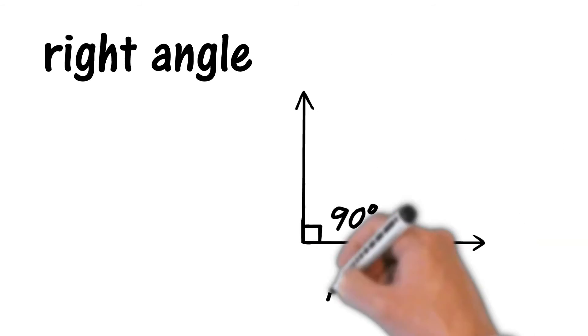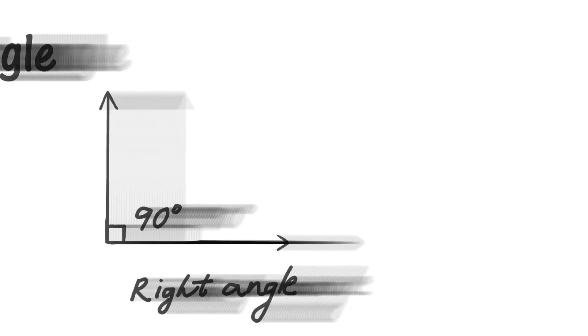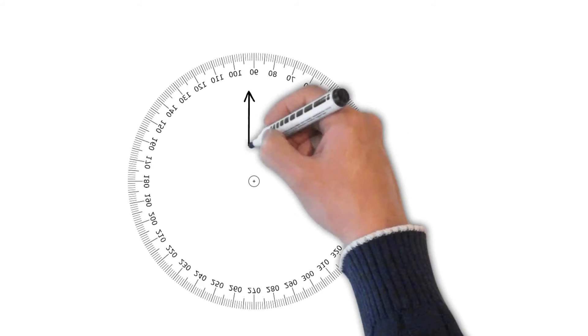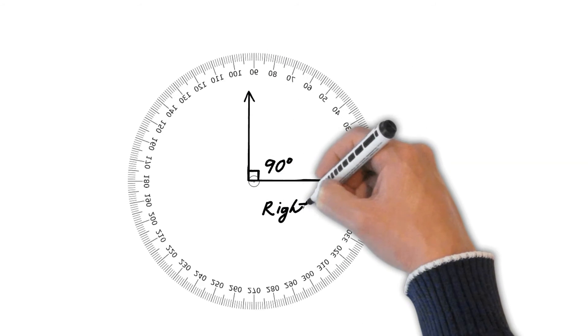A right angle is a special angle. It looks like the corner of a square or rectangle. A right angle measures 90 degrees.